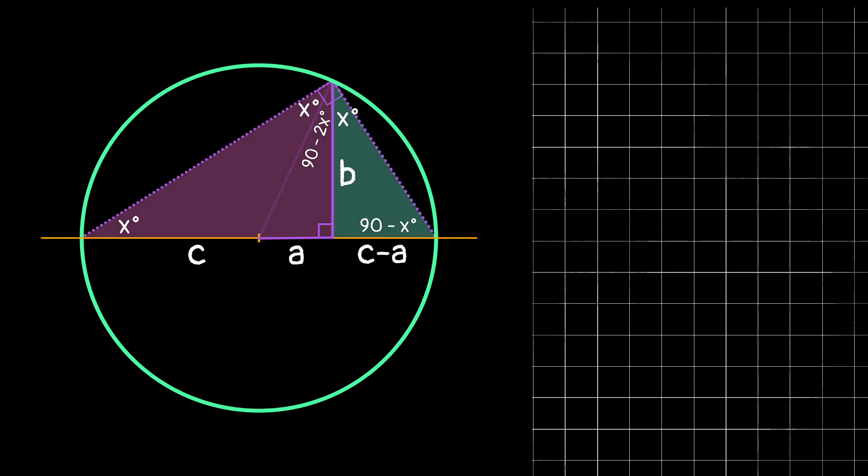It actually turns out that these are similar triangles, and how we can prove that is by looking at the angle measures. They're both right triangles. They both have an angle with measure x, and then if we look at that third angle, we see this one is already 90 minus x, and then if we look at the big triangle and add 90 minus 2x plus x, we also get 90 minus x. So since all three angles in these two triangles are the same, we know that they are similar.